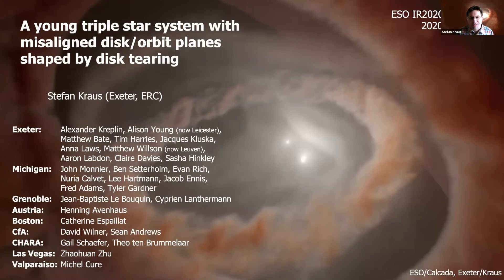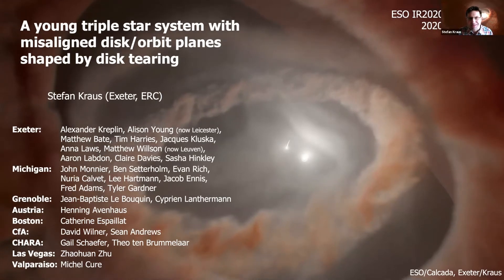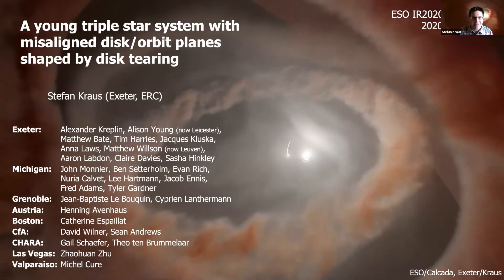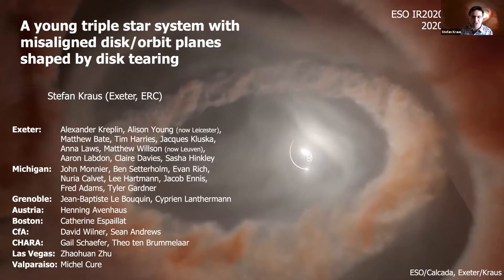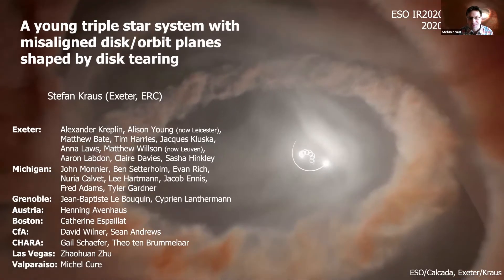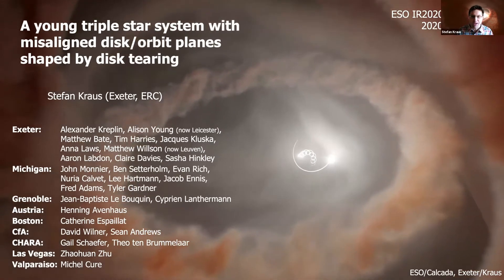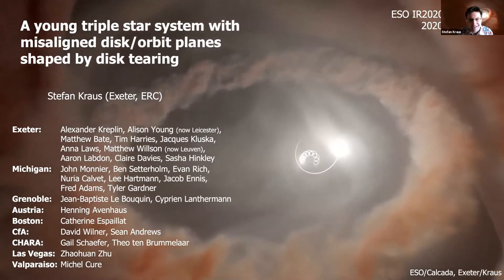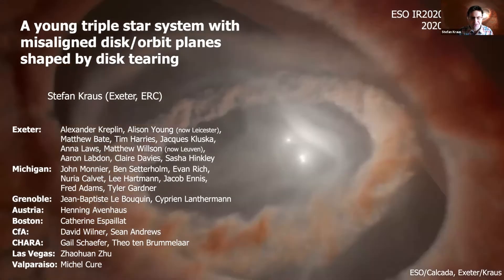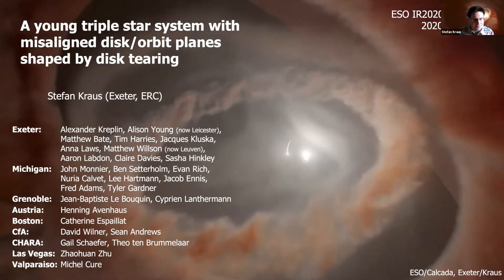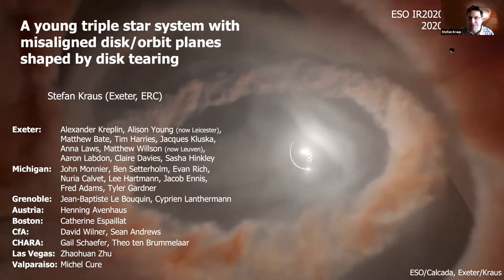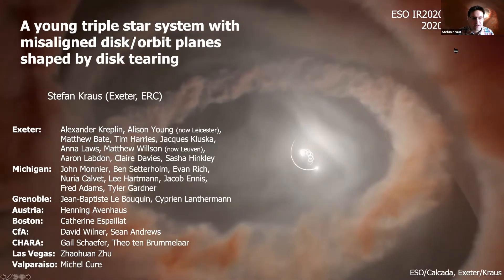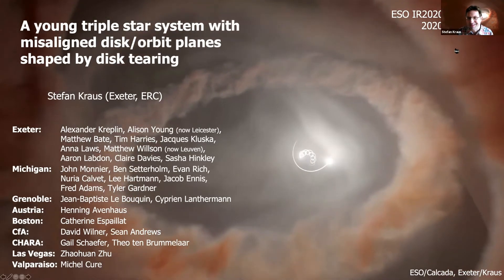I would like to report on a study that we conducted over 12 years on a young triple-star system, namely GW Orionis. We employed a wide range of high-angular-resolution observation techniques, involving both theorists and observers. I would like to first acknowledge my collaborators for this long-term effort.